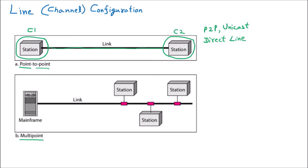Whenever a direct line is present, it is obviously very costly. For example, if my system is at home and the wire comes directly from the internet provider's company to my home, that will be costly. However, that direct line will have very high speed because nobody is sharing it, so the speed is high.